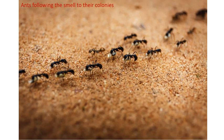Children, do you know animals also have these sense organs? For example, ants identify their friend by smell. They find their colony by following the trail of smell left by their fellow ants.